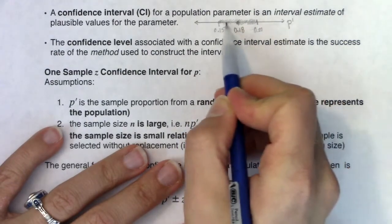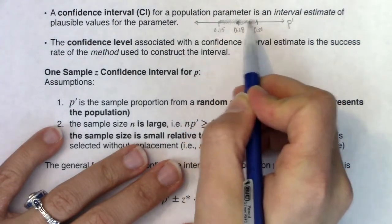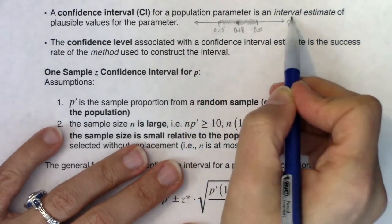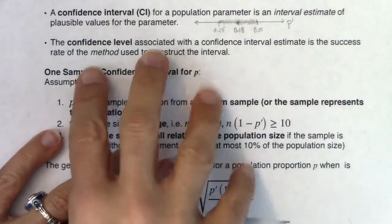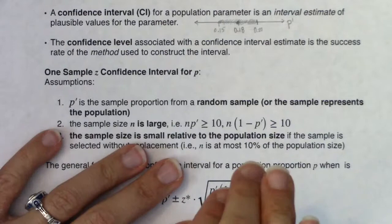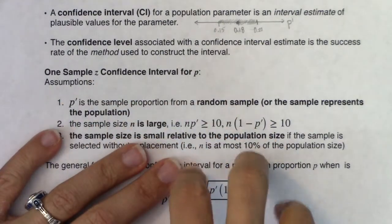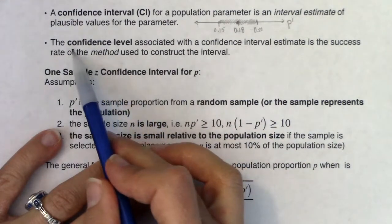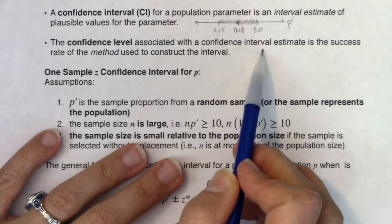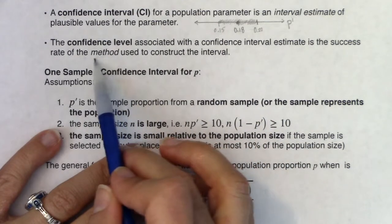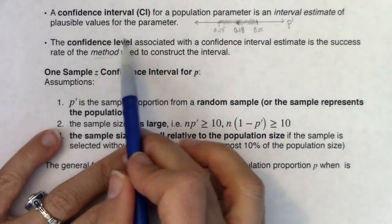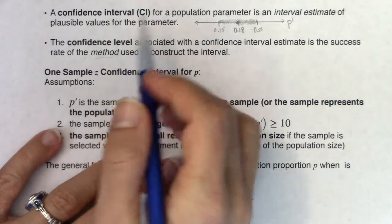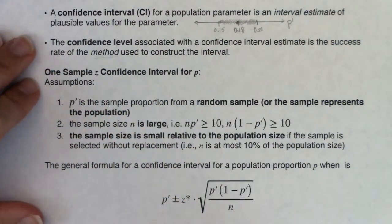That point becomes an entire interval on the number line — that's why we call it an interval estimate. The true population proportion p can be anywhere in here. We'll talk about confidence level in a bit, but it's the success rate of the method used to construct the interval. We'll come back to it.